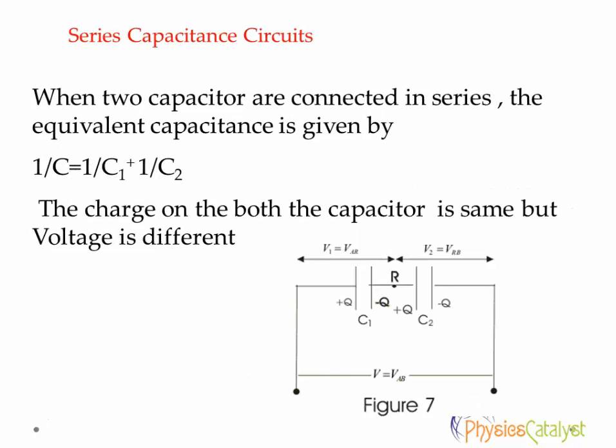Series capacitance circuit. When two capacitors are connected in series, the equivalent capacitance is given by 1 by C equal to 1 by C1 plus 1 by C2. The arrangement is shown in the figure.